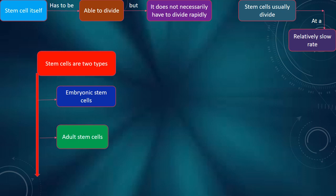There are two types of stem cells: embryonic stem cells and adult stem cells.